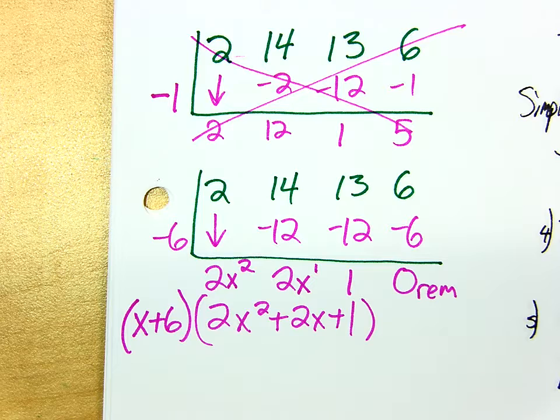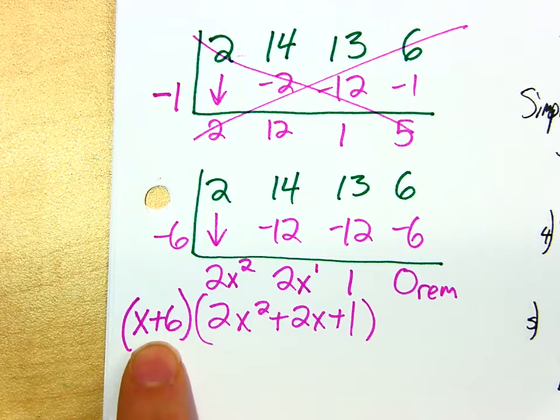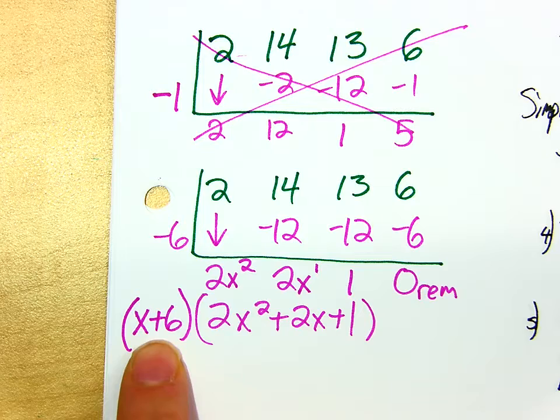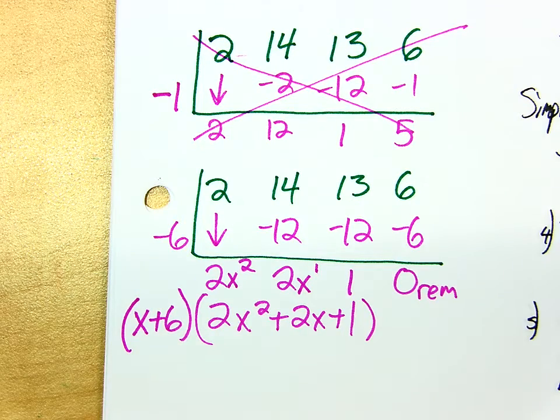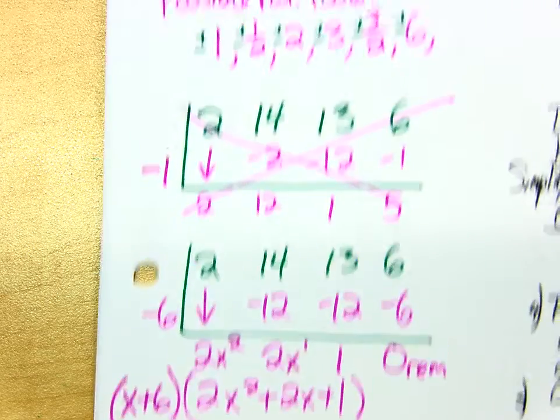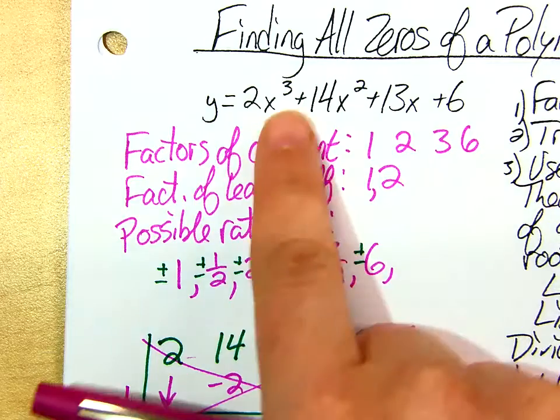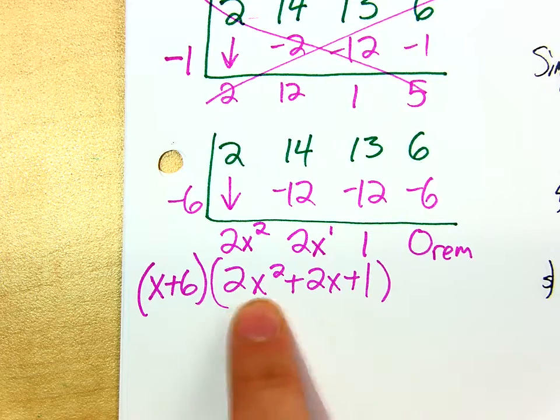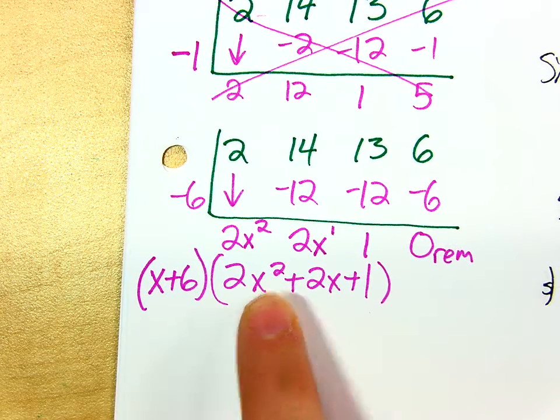I'm not done yet though because I'm trying to find all the zeros. I have one of them. One of them was -6. I already found that. How many am I supposed to have altogether? Three because the degree of this thing was 3. So there's two more for me to find. They're going to come from here. Isn't this thing going to have two answers because it's degree 2? Yes.